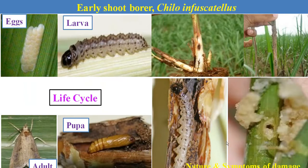The first borer is the early shoot borer. The name itself indicates that this borer attacks sugarcane at an early stage. The species is Chilo infuscatellus. There are four life stages in its life cycle. The female moth lays eggs in a group on the leaves. After hatching, the caterpillar emerges and enters the main stem, starting to feed. Pupation also occurs inside the stem. This caterpillar makes a small circular hole just above the ground level on the stem.